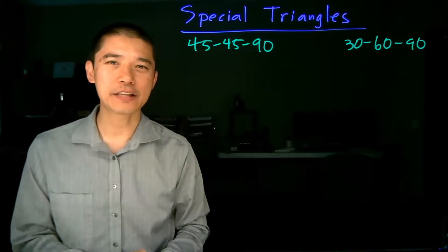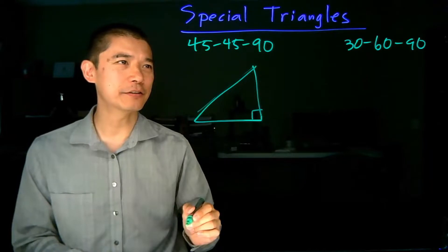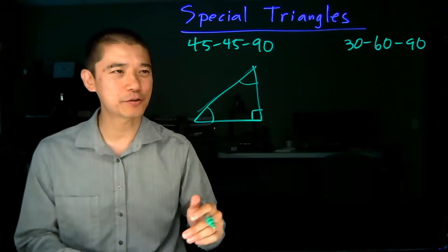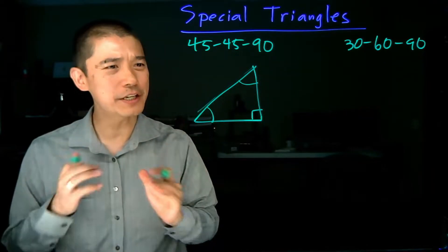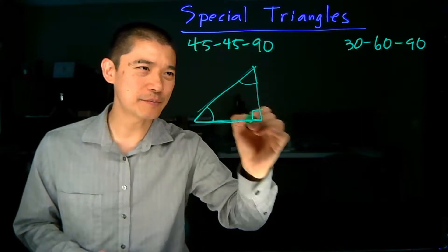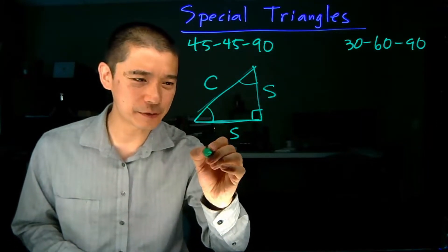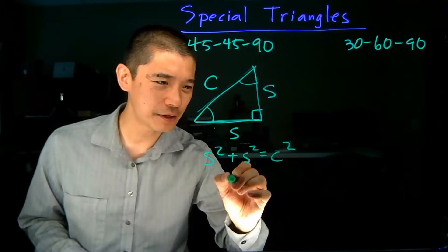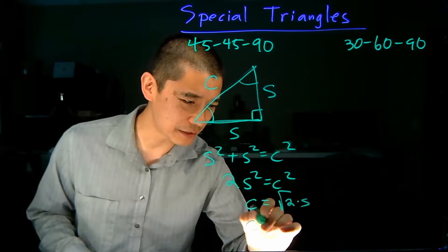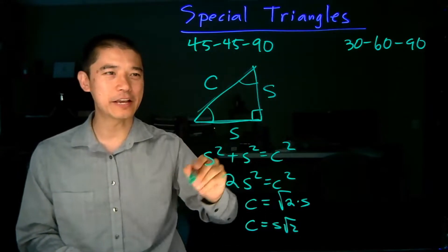These numbers — 45-45-90 — correspond to the angles of the triangle. We have a right angle, that's our 90, and these two angles are both 45 degrees, and they add up to 180 degrees as they should. What we're really interested in are the lengths of the sides. Because this is an isosceles triangle, both legs are S, and we want to find the hypotenuse. Applying the Pythagorean theorem: S squared plus S squared equals C squared, so 2S squared equals C squared, giving C equals S times the square root of 2. We took the positive case because we're talking about a geometric length.